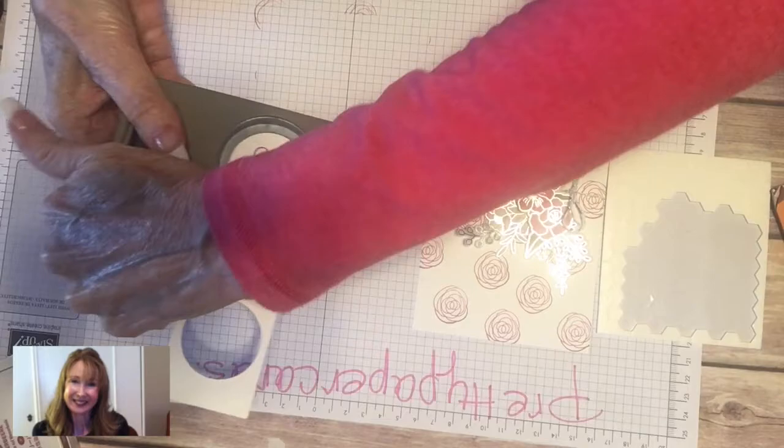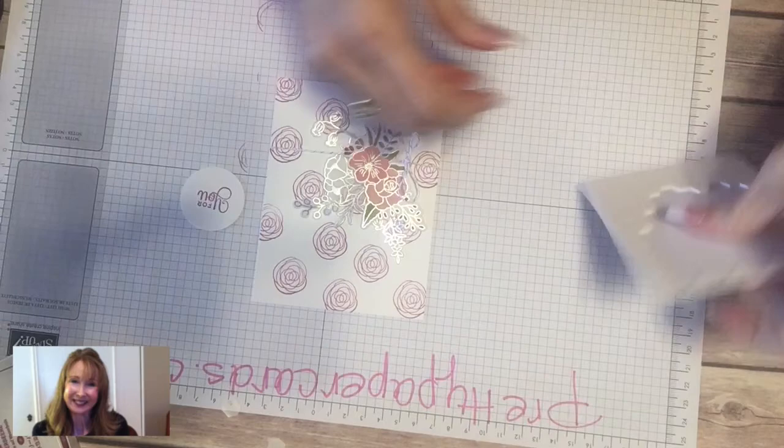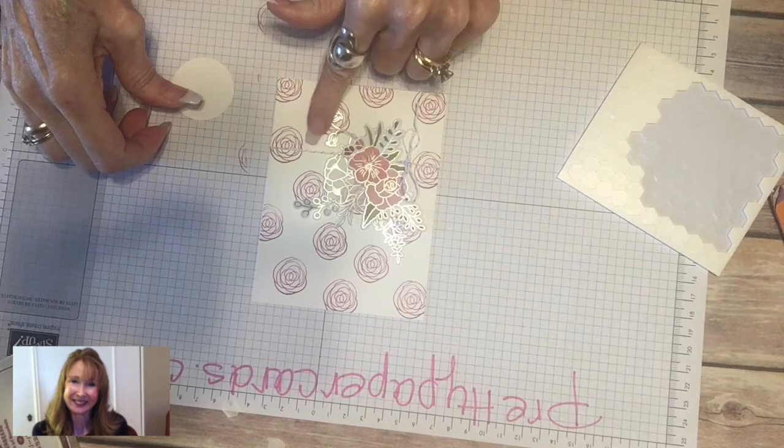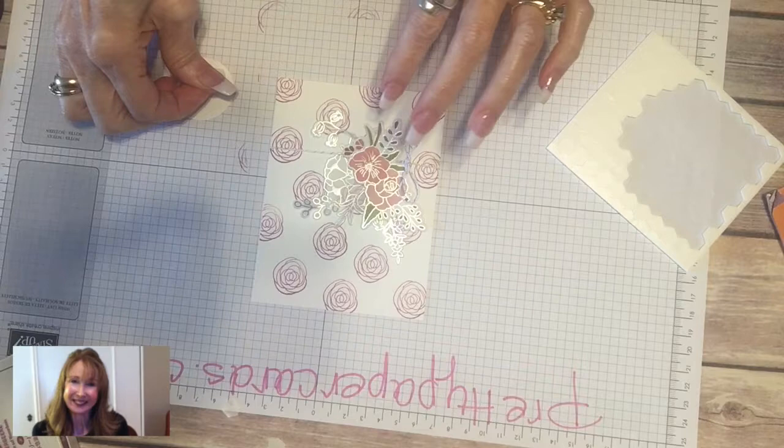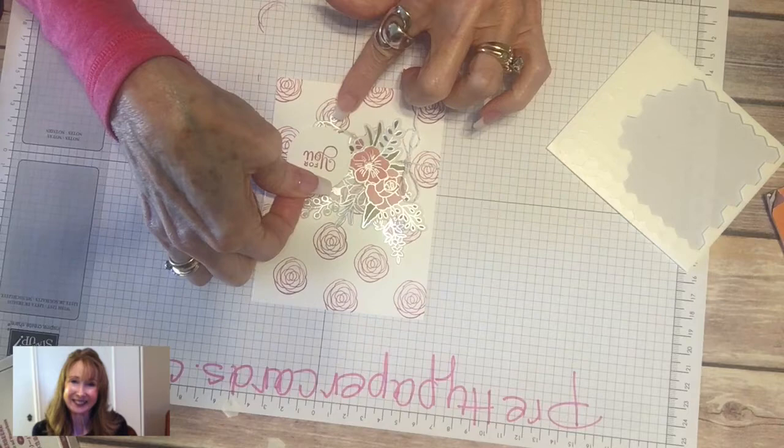I'm going to punch it out with a one and a half inch circle punch. Just slide it in here and I just make sure I balance, get it in the center on all sides. Punch that out. We're going to raise this up on dimensionals also and I'm going to tuck it right there. I like to use one dimensional on the top and one on the bottom so hopefully the twine will go in between. Let's do that. We'll just center it right in there - For You. Darling, right?